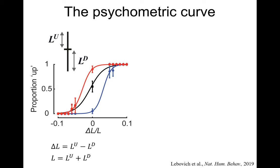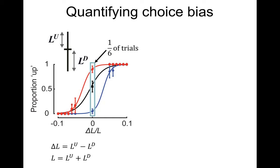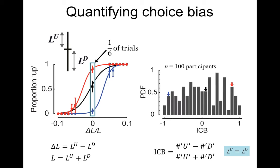How common is choice bias? Is everyone in the red or blue, or are most people unbiased with occasional extremes? To quantify the bias, we looked at the 'impossible' trials — one-sixth of trials where there was no correct answer — and computed the number of 'up' responses minus 'down' responses divided by the sum. This is a measure between minus one and one, where zero is no bias. The distribution over subjects is roughly flat, and we will talk about the exact shape of the distribution later.